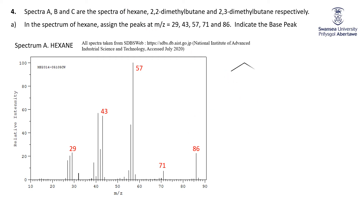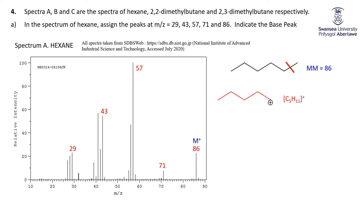Well, our molecule, hexane C6H14, has a molar mass of 86. So obviously that's this one here — that's the molecular ion, M+. You don't see it all the time, but when you do, it's rather nice. Now, all we're doing is successively cutting these bonds to get these different fragments. So the first thing is, let's chop off the end. The end is a CH3, which is worth 15. We take 86 and subtract 15 from it — we get 71. So the first peak is C5H11+.